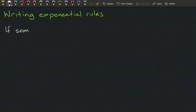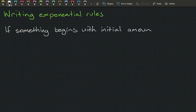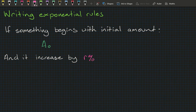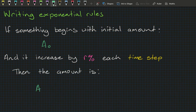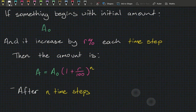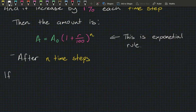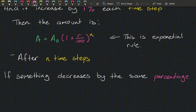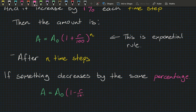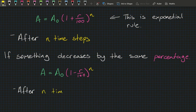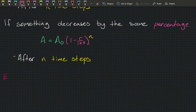To recap: if something begins with initial amount A₀ and increases by r percent each time step, then A = A₀ × (1 + r/100)^n after n time steps — the exponential rule. Similarly, if something decreases by the same percentage, A = A₀ × (1 − r/100)^n after n time steps.